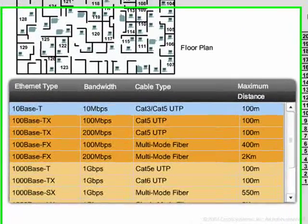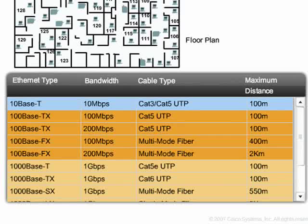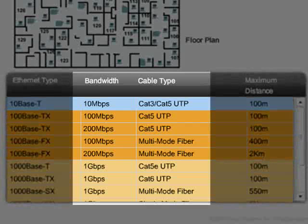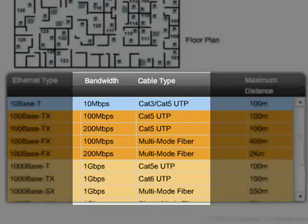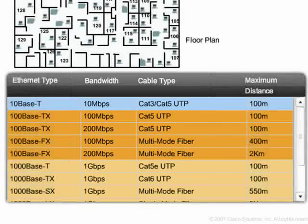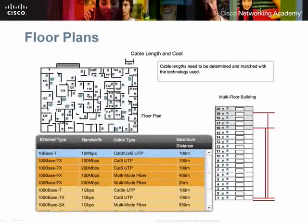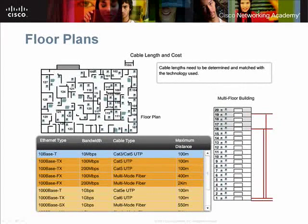A third characteristic that varies among media types is bandwidth capability. As you see in the table, the bandwidth for each type of cable can vary significantly. When considering how much bandwidth is needed to connect two devices, you need to determine how much traffic will pass between those devices.